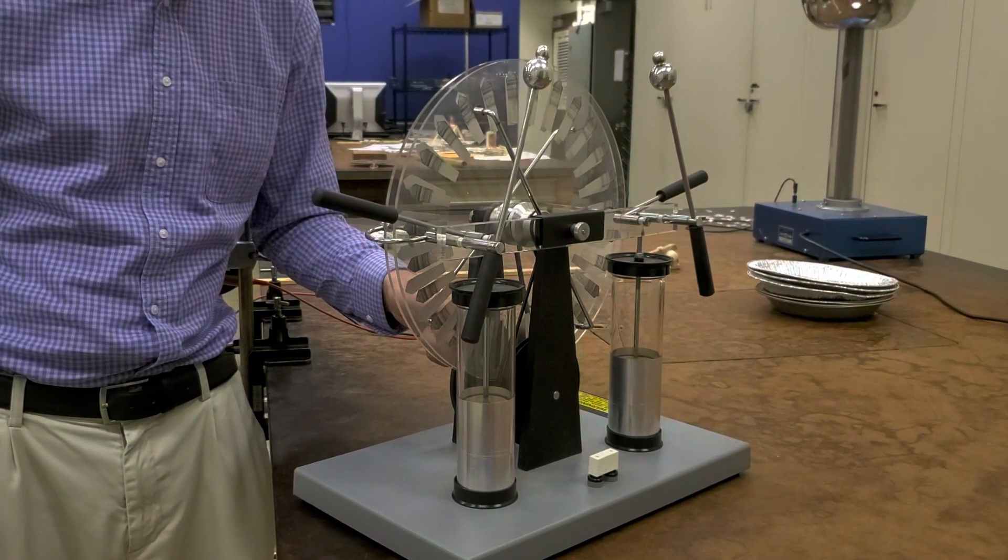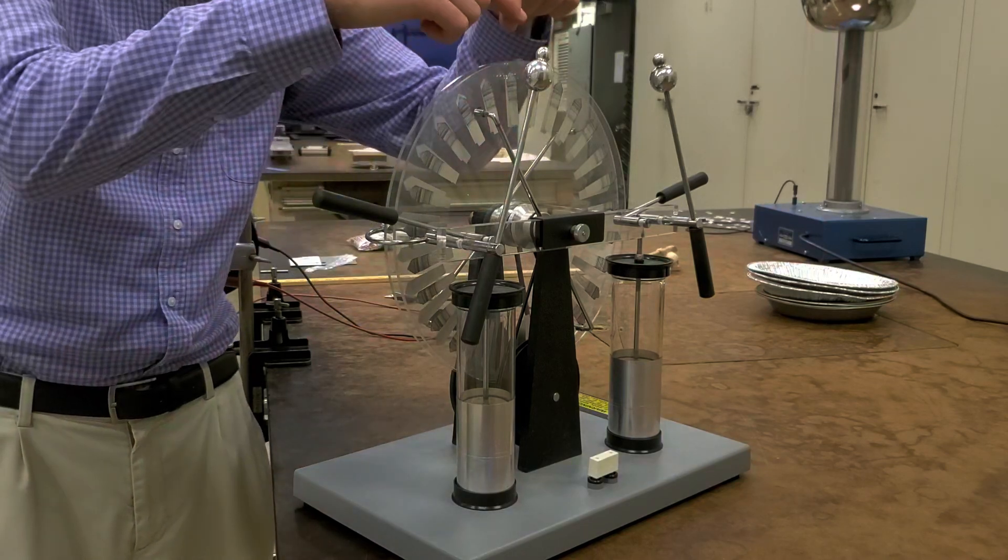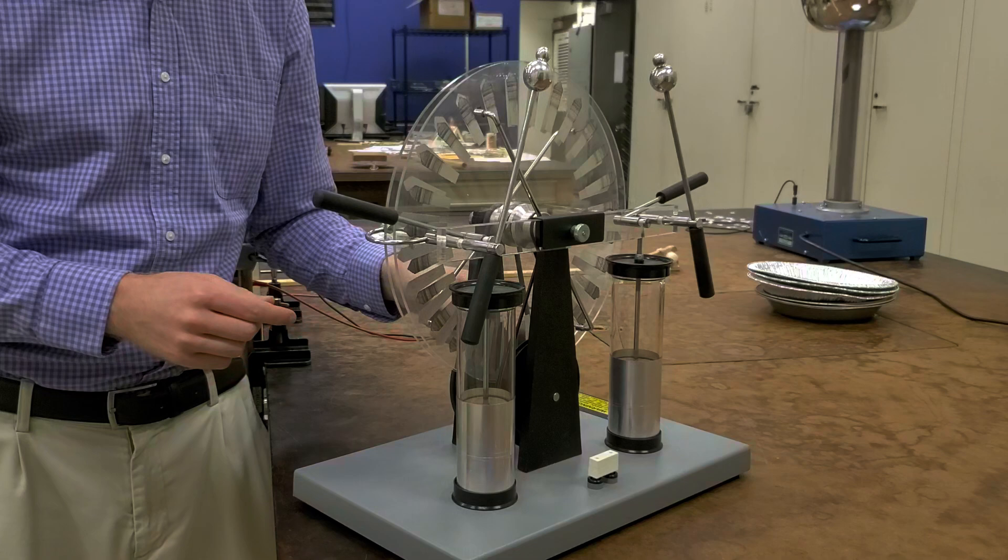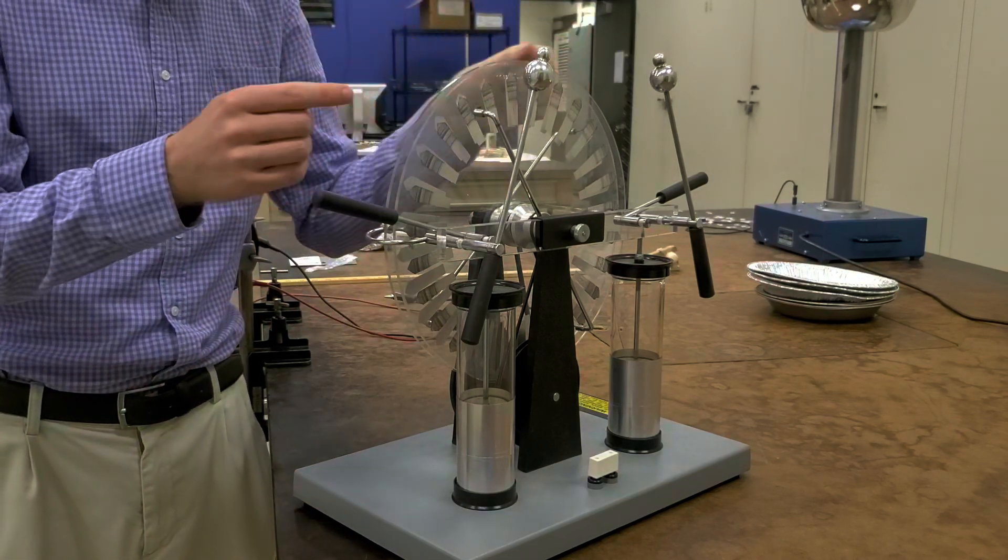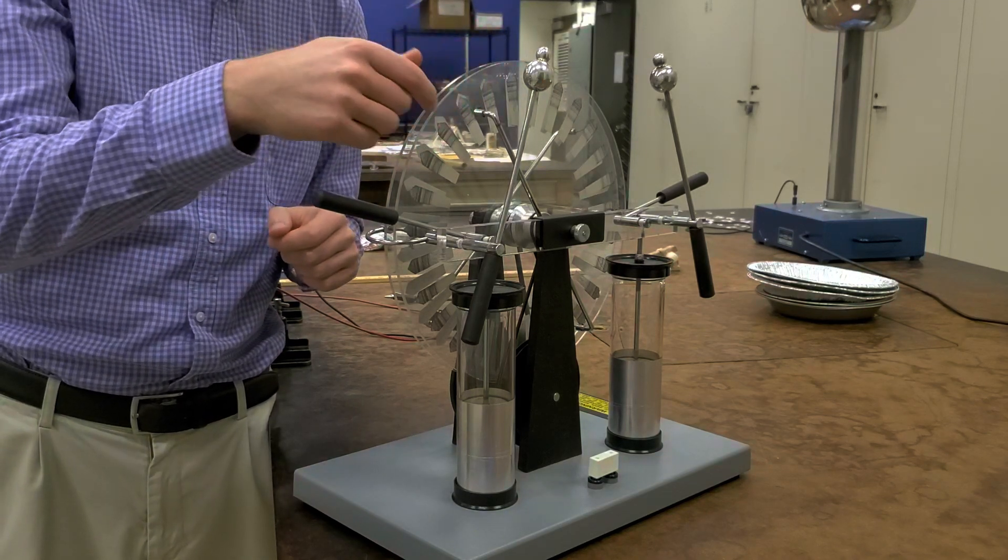Hi, everyone. I have here a Wimshurst generator. It's essentially these two circles with various conducting pieces on them. When I turn this crank on the back, those pieces will rotate past each other, and there are metal brushes connecting to those conducting pieces.